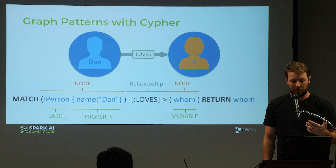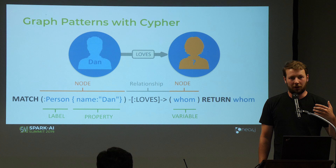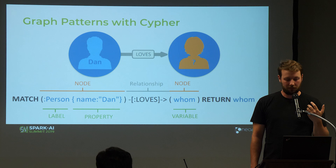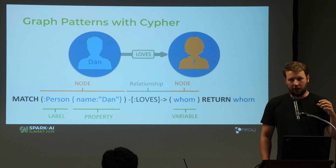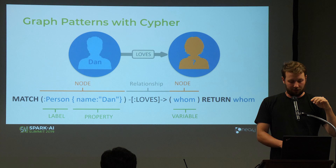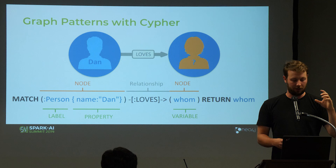In Neo4j, we invented a query language called Cypher. Cypher tries to extract data from a graph much like SQL, but on graphs. The central concept in Cypher is pattern matching — we define a pattern graph that we search for within our bigger graph.